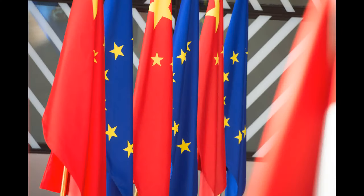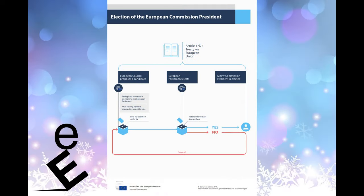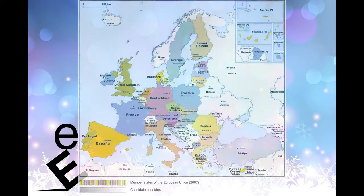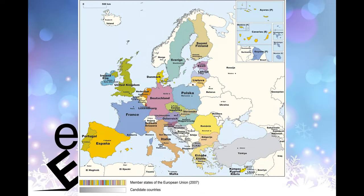The EU and European citizenship were established when the Maastricht Treaty came into force in 1993. The EU traces its origins to the European Coal and Steel Community and the European Economic Community, established, respectively, by the 1951 Treaty of Paris and 1957 Treaty of Rome.